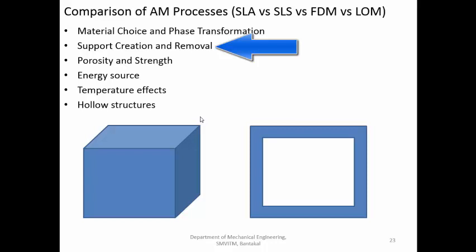FDM definitely requires the creation of support structures. Using multiple nozzles, it is possible to use a separate material for supports — one that is soluble in water or solvent, or a low-strength material that can be easily broken. If the support material is the same as the workpiece material, removal may be slightly more difficult.